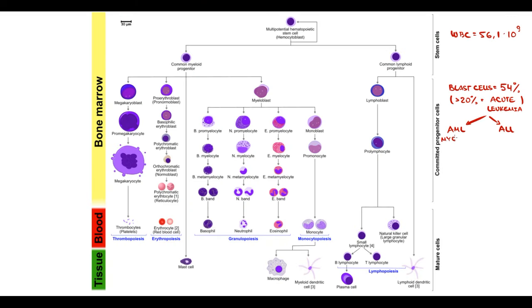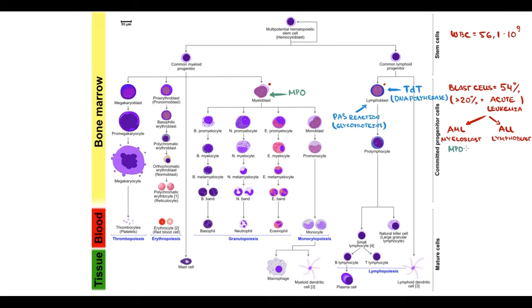Acute myeloid leukemia is caused by myeloblasts and acute lymphoblastic leukemia is caused by lymphoblasts. To determine the subtype of leukemia, we stain blast cells with specific markers. For lymphoblasts, the markers are TdT (a DNA polymerase) and the PAS reaction (which detects glycogen) — both are positive in lymphoblasts. The specific marker for myeloblasts is myeloperoxidase. If myeloperoxidase is positive and TdT/PAS are negative, it is AML; if TdT and PAS are positive, it is ALL.